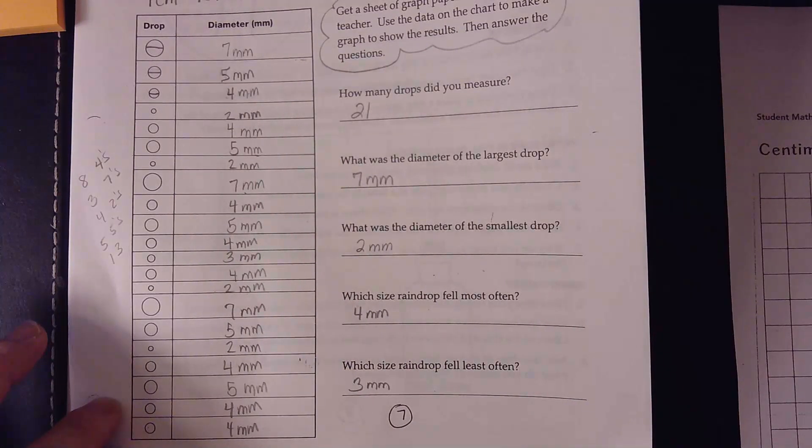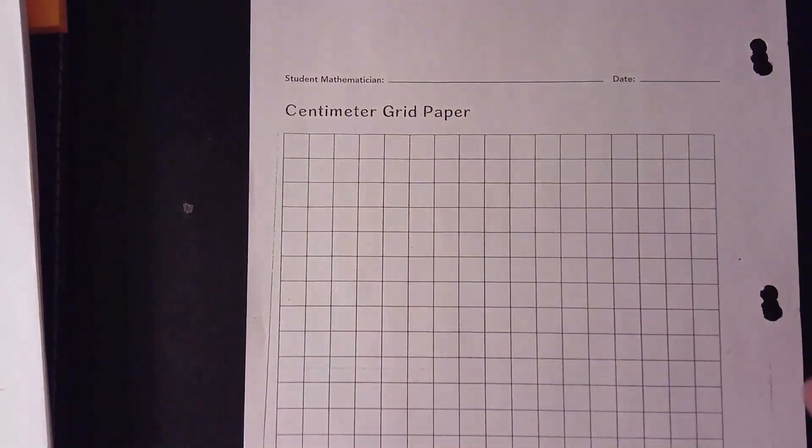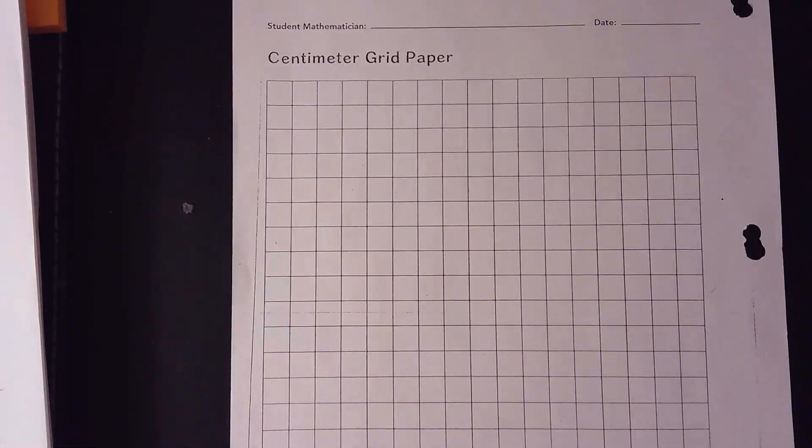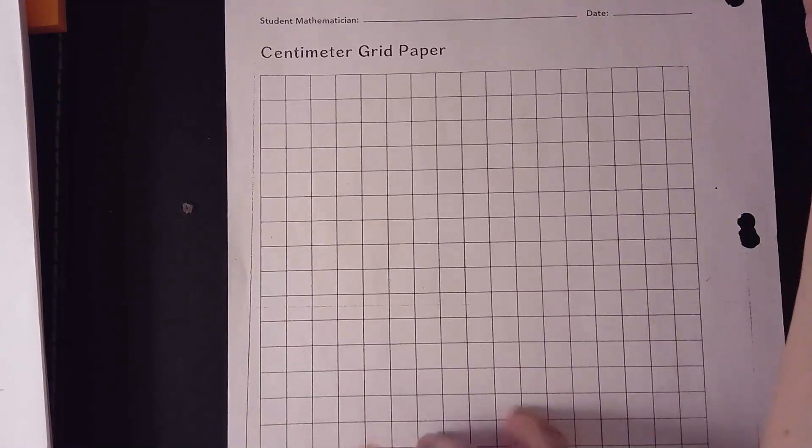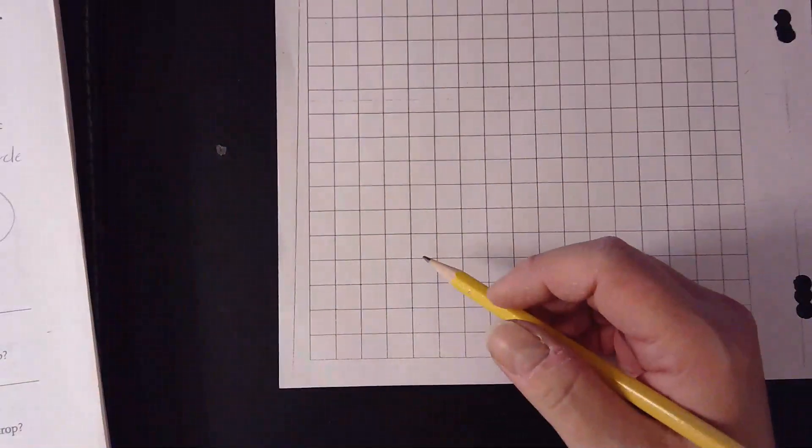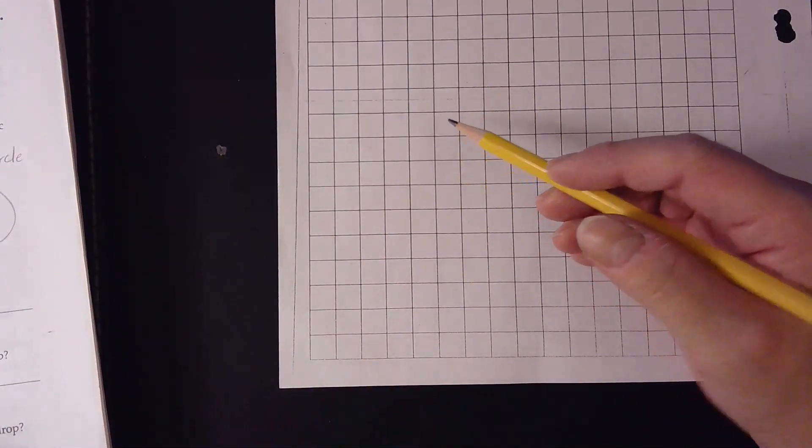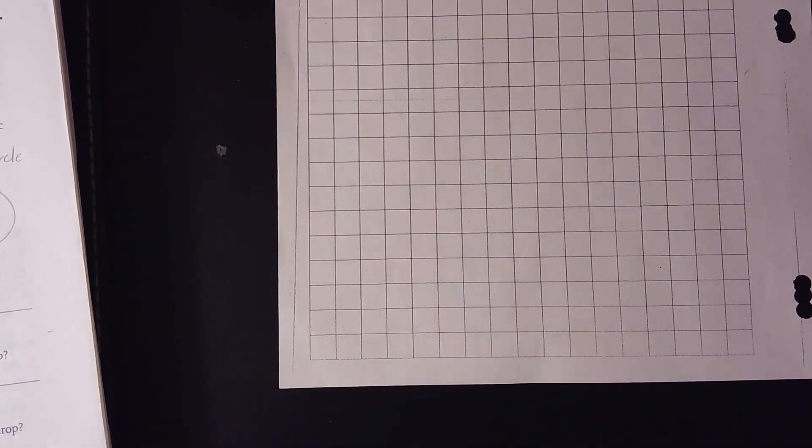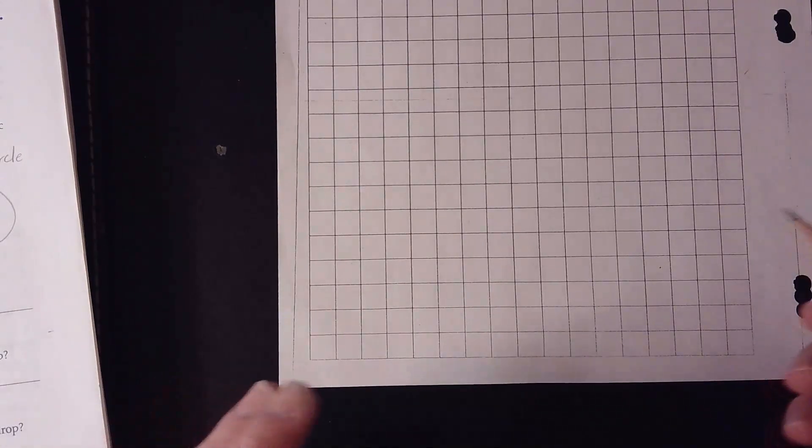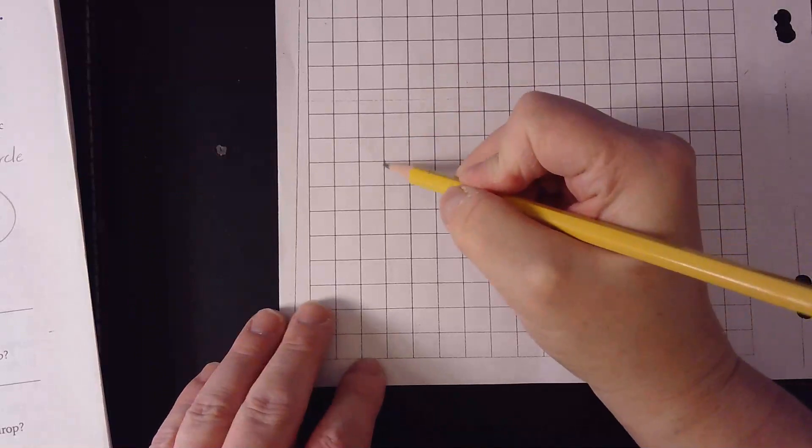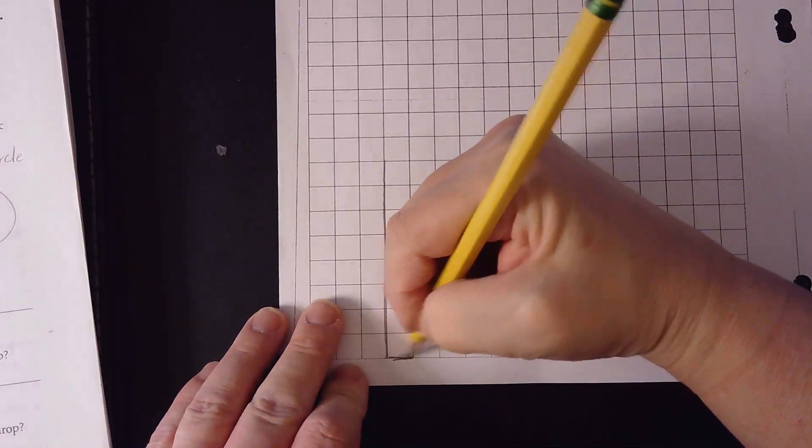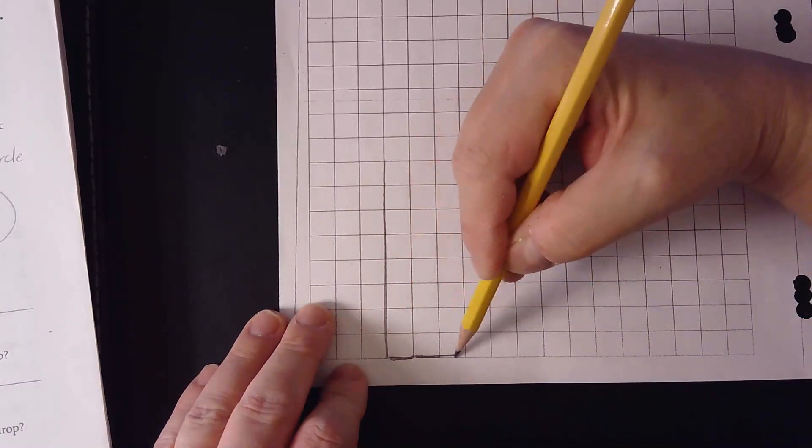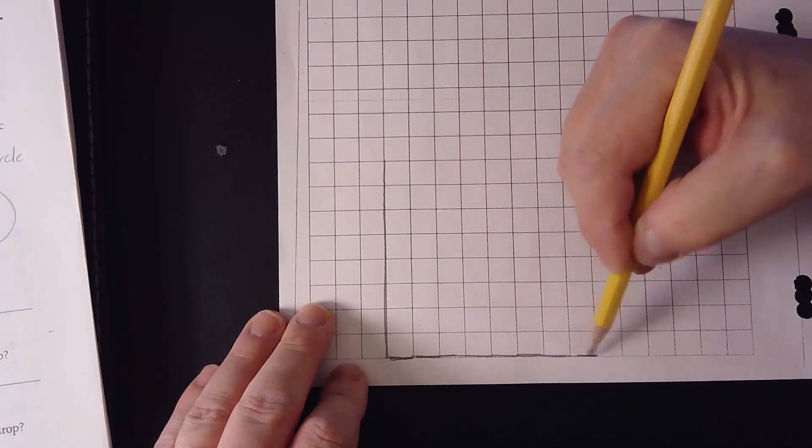So now we're going to take that information and we're going to put it on our centimeter grid paper over here. We're going to make a graph with the information and in order for us to do that we need to look at the very bottom of our paper and this can be anywhere in the graph that you want to do it. We know that we're looking at a total of 21 and then it's going to vary between two and seven. So we'll just say from maybe one to eight. So we'll make a line here so this will be one, two, three, that's four, that's five, that's six, that's seven, and that's eight.